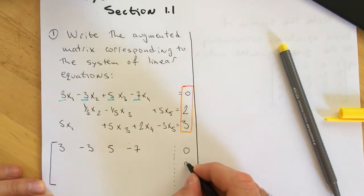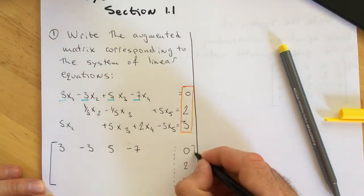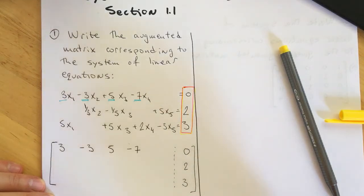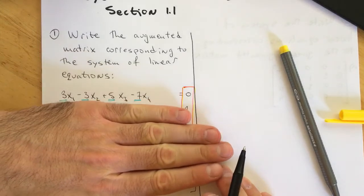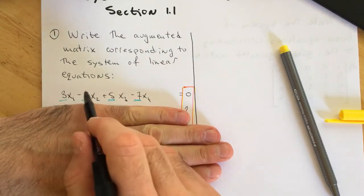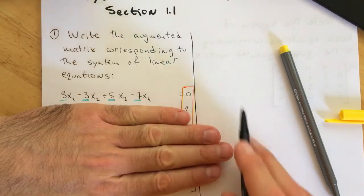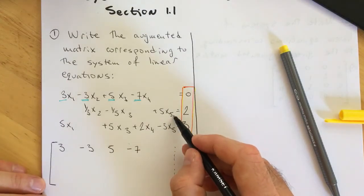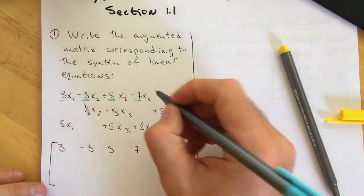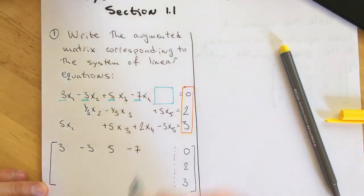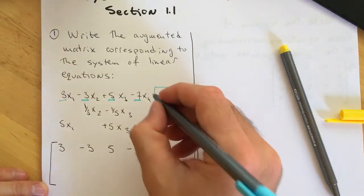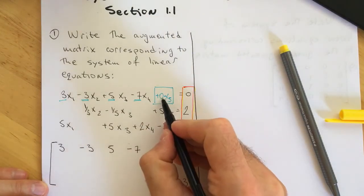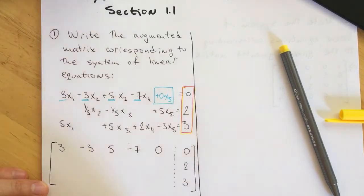In the augmented matrix, all you have to do is plug in the constants at the end. You have to be careful — before you start writing the matrix, check how many variables you have. In the first equation we only have four variables: 3x1, negative 3x2, 5x3, negative 7x4. But the system has five variables, so since x5 does not appear in the first equation, we treat that as plus 0 times x5, so this place gets a 0.